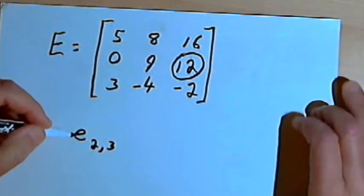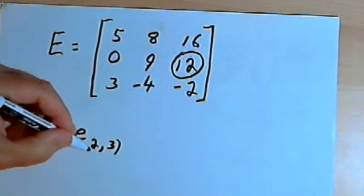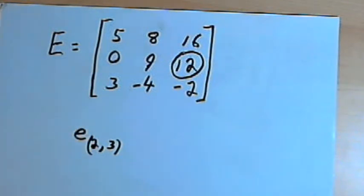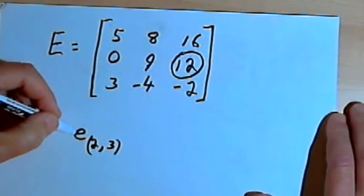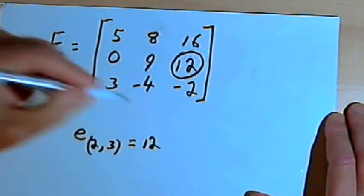So I could talk about element E of 2 comma 3. Sometimes you'll see this 2 comma 3 in parentheses. And I could say that that E equals 12.